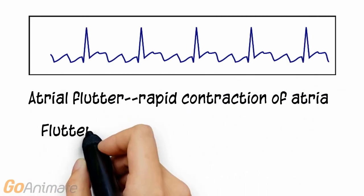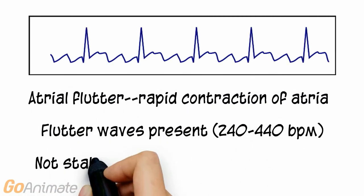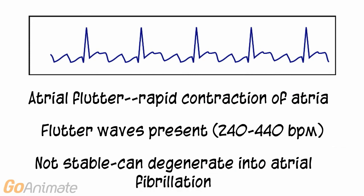Atrial flutter is a rapid contraction of the atria. Flutter waves are present at a rate of between 240 and 440 beats per minute. Atrial flutter is not stable and can degenerate into atrial fibrillation.